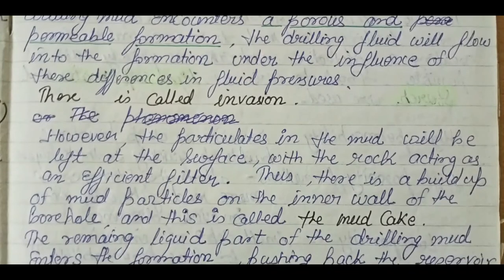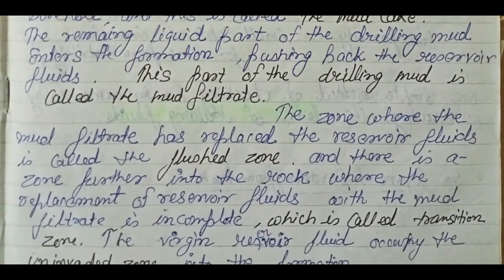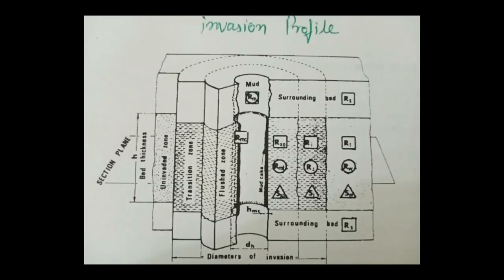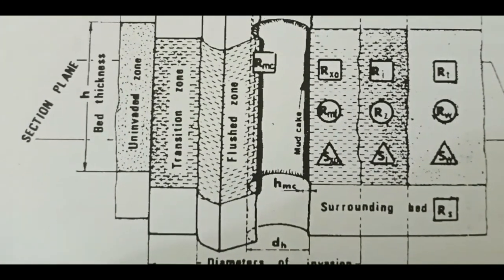The particulates in the mud are left at the surface with the rock acting as an efficient filter, and there is a buildup of mud particles on the inner wall of the borehole — this is called mud cake. The remaining liquid part of the drilling mud enters the formation pushing back the reservoir fluid, and this part is called mud filtrate. The zone where the mud filtrate has replaced the reservoir fluid is called the flush zone. Beyond that there is a transition zone and then an uninvaded zone, also called the virgin zone, where the formation fluids have not been touched by the mud filtrate.